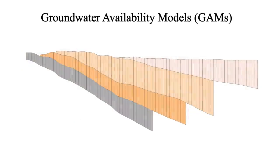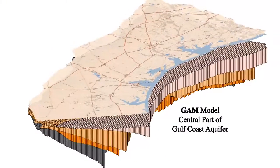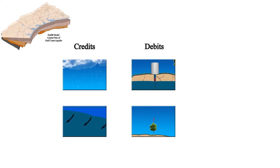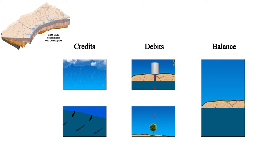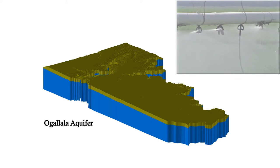Groundwater Availability Models are computer programs that simulate groundwater flow. They account for the amount of water entering as a credit or deposit, the amount of water leaving as a debit or withdrawal, and the amount of water remaining in an aquifer as the balance. These models can be used to predict the impact of large pumping activities on an aquifer.